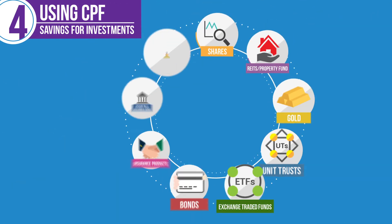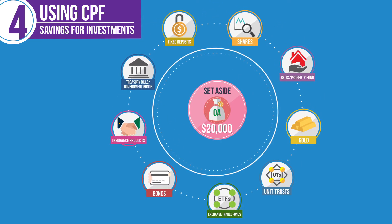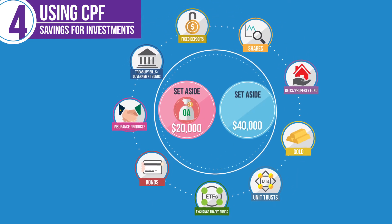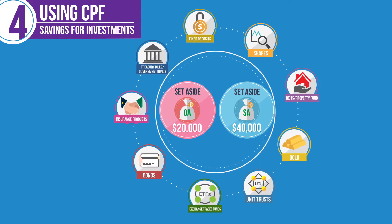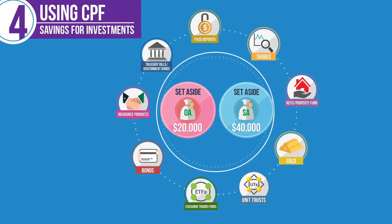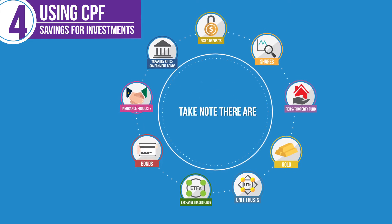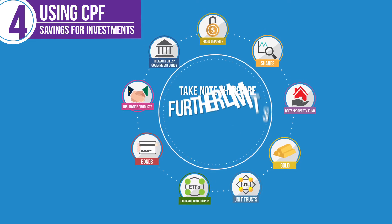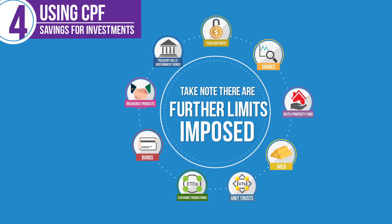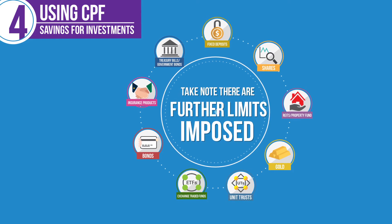Only monies in excess of $20,000 in your Ordinary Account and $40,000 in your Special Account can be used for investment under CPF-IS. Take note that there are further limits imposed on some investment products, which are computed based on your investable savings.